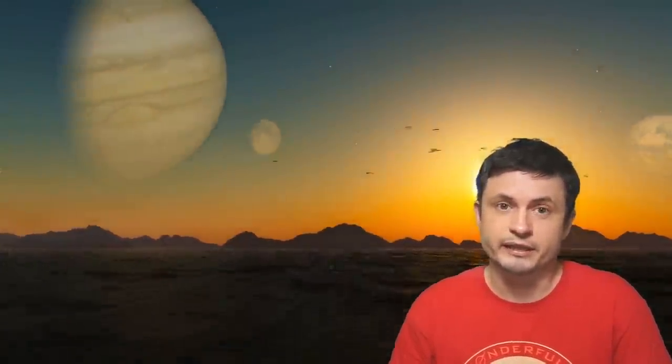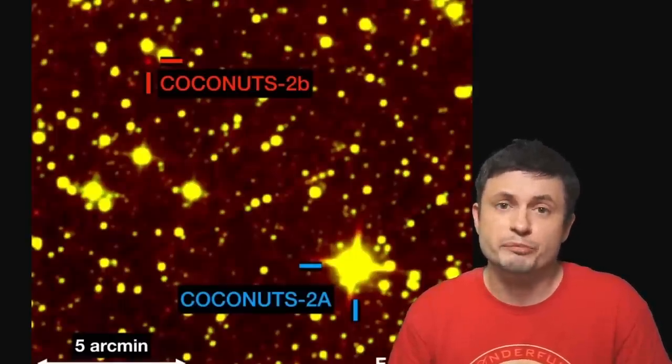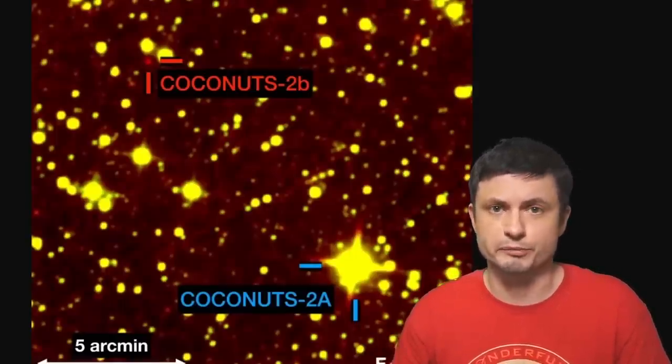That's right, it's called Coconuts. But the name itself has nothing to do with the shape or the composition of the planet. It is nevertheless a very interesting exoplanet that was recently directly imaged by the scientists whose paper you can find in the description below.